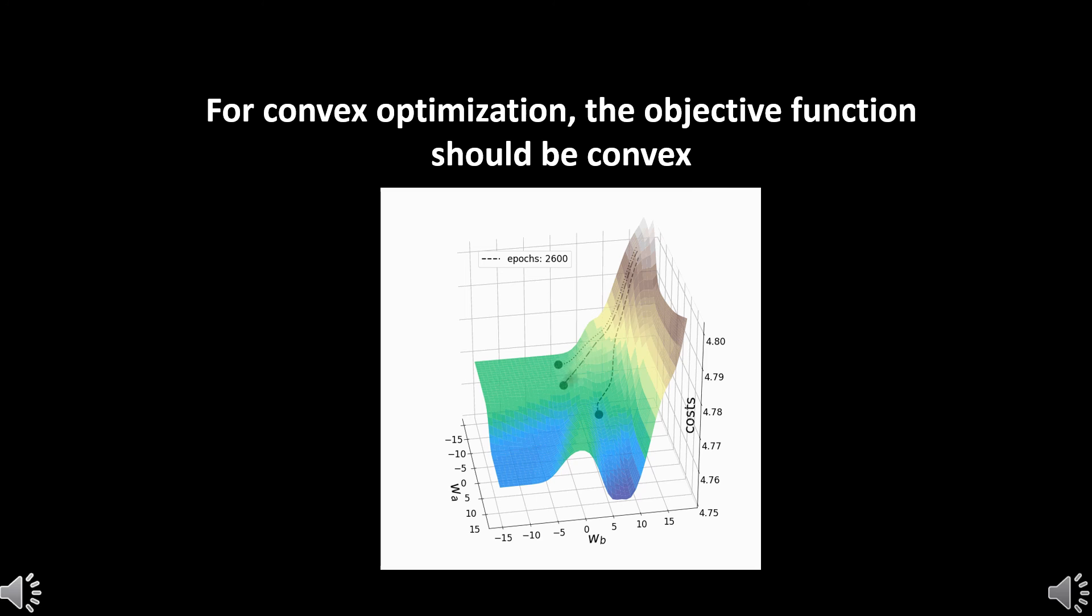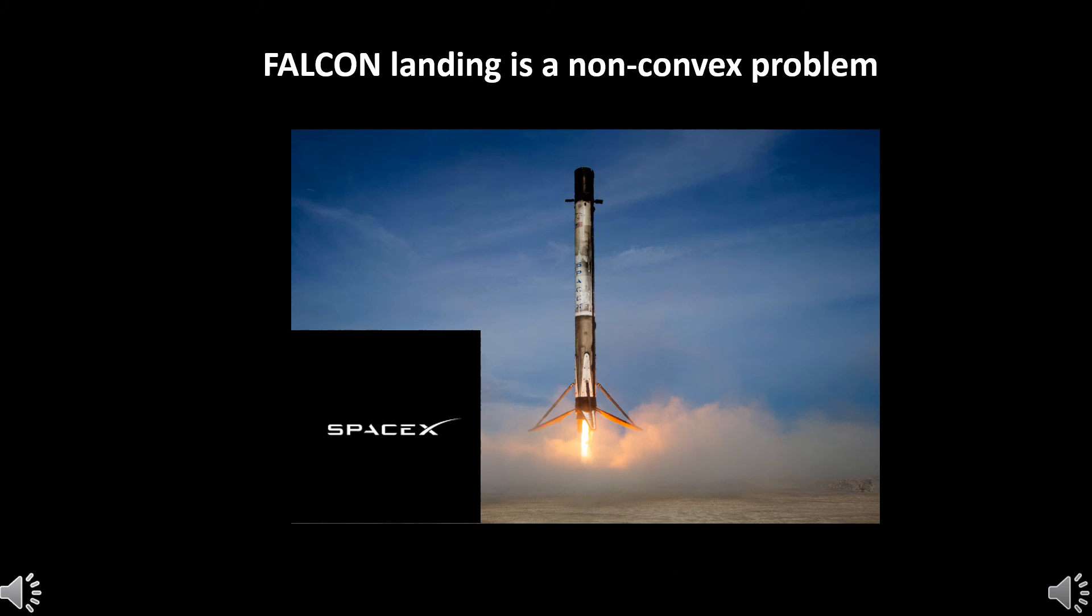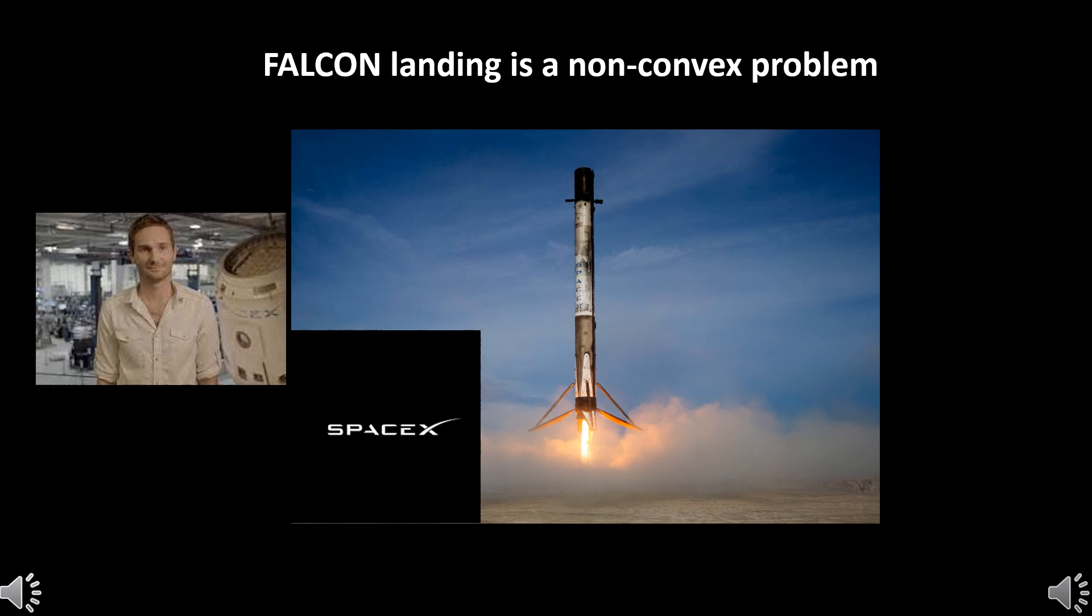But in Falcon landing the objective function is not convex, making the problem non-convex optimization which has no well-established methods to solve. Here comes the genius of Lars Blackmore who designed the system for NASA Mars rover landing. Lars with other SpaceX engineers converted the non-convex optimization to a convex optimization which can now be solved using established computational methods. Thus the genius of SpaceX and NASA has made this dream project come true.